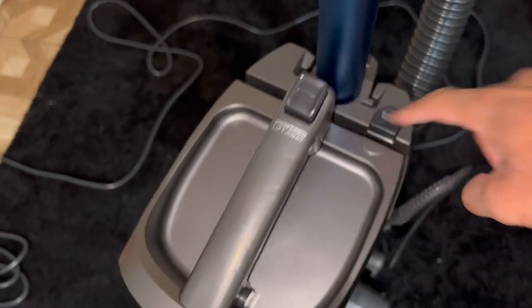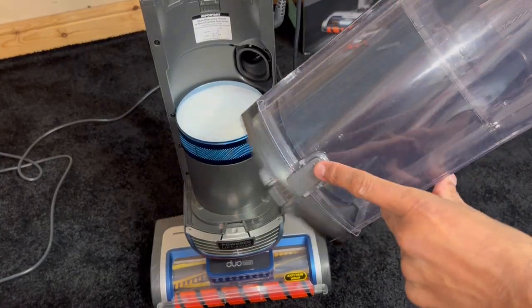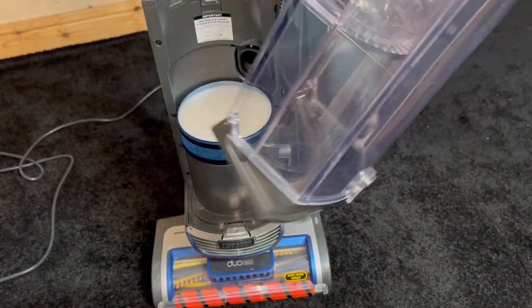Here you've got the bin release. I'll press the dust cup release button. That allows you to detach your bin and cyclone. To empty your bin, you just press the release button right there. Then all the dirt falls out.